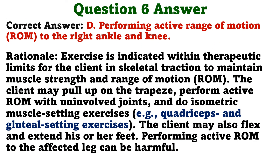The correct answer is D: Performing active range of motion to the right ankle and knee. Rationale: Exercise is indicated within therapeutic limits for the client in skeletal traction to maintain muscle strength and range of motion. The client may pull up on the trapeze, perform active range of motion with uninvolved joints, and do isometric muscle setting exercises. The client may also flex and extend the feet. Performing active range of motion to the affected leg can be harmful.